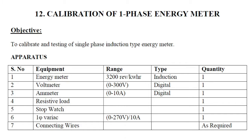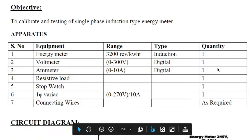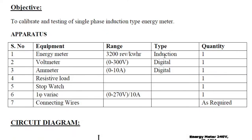Let us see what apparatus is required to perform single-phase energy meter calibration. We need an energy meter of induction type with a range of 3200 revolutions per kilowatt hour — this is the meter constant. We also need a voltmeter of 0 to 300 volts range and an ammeter of 10 amps range, both of digital type.